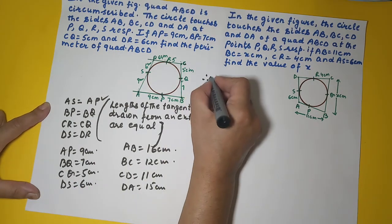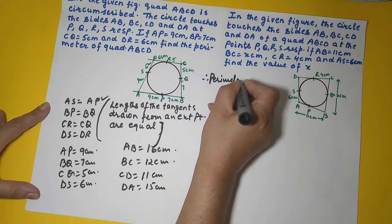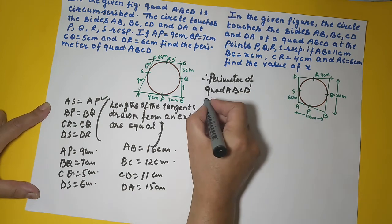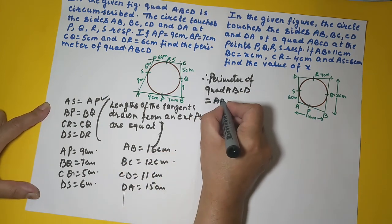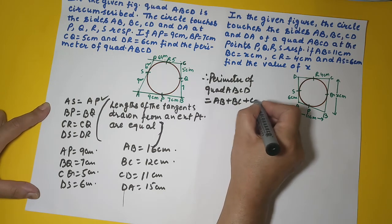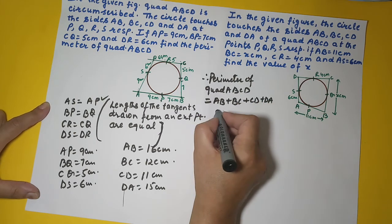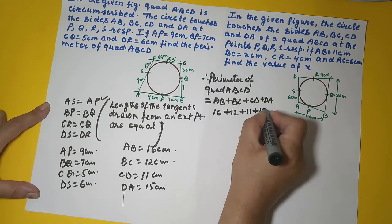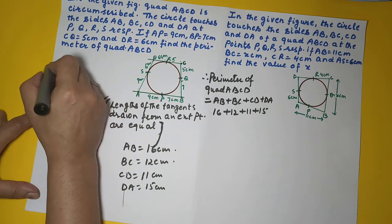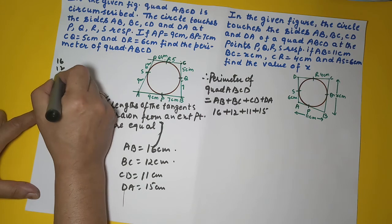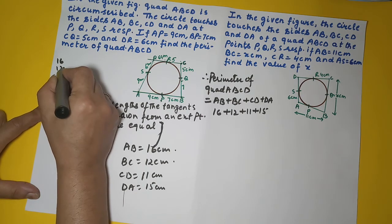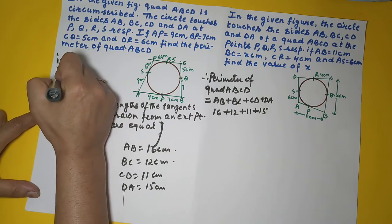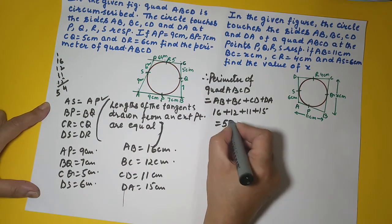Therefore, the perimeter of quadrilateral ABCD is the sum of all sides: AB plus BC plus CD plus DA, which is 16 plus 12 plus 11 plus 15, giving us 54 centimeters.